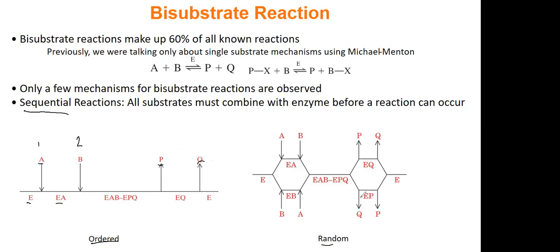While in random, again, it's any order. P could come off first or Q could come off first. And just so I get this question sometimes too, A, B, P, and Q are just random molecules. It really doesn't matter what they are. They're just placeholders for a molecule.